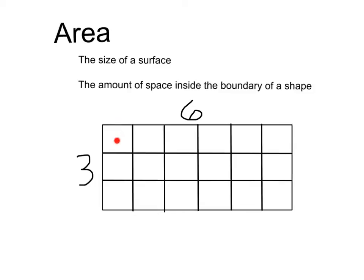If we had a width of 3, that would be 1, 2, 3 squares. A length of 6, that would be 1, 2, 3, 4, 5, 6 squares.